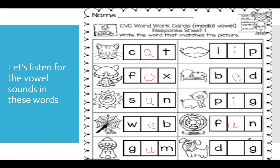And last but not least — dog. D-O-G. What letter makes the sound 'ah' for octopus? Because the letter is the letter O. Dog.